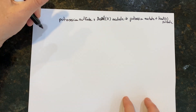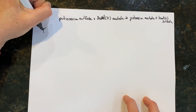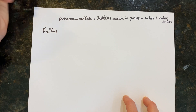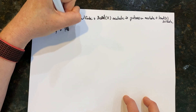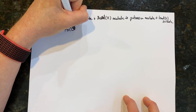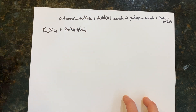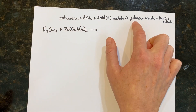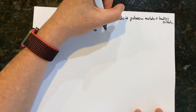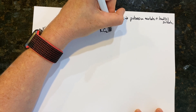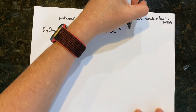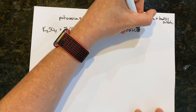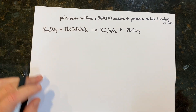Let's write it out for practice. Potassium sulfate is K₂SO₄ — potassium has a 1+ charge, sulfate is 2−. Plus lead(II) acetate, where acetate is C₂H₃O₂⁻. This would form potassium acetate, KC₂H₃O₂, plus lead(II) sulfate, PbSO₄. Again, if you couldn't do that, go back to Chapter 4 — you need to know nomenclature to pass the class.